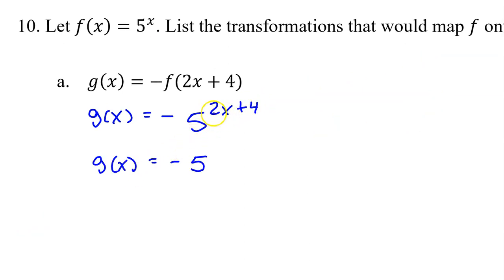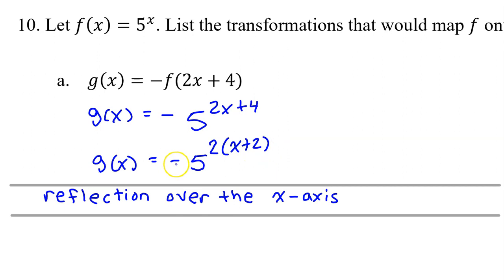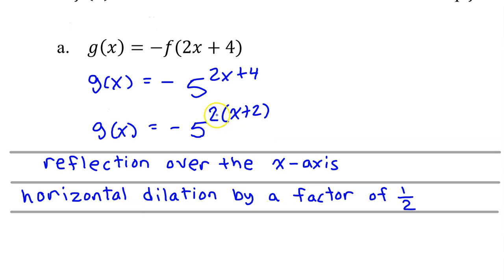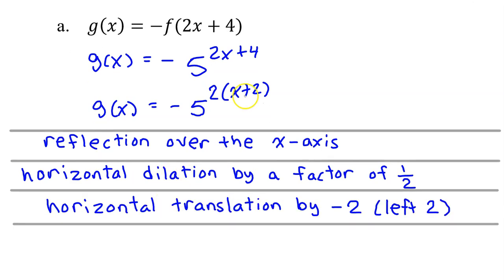To determine the transformations happening in the exponent, we need to factor out the 2 in the front, so this will become 2 times x plus 2. A negative sign in the front is a reflection over the x-axis. A 2 multiplying on the inside gives a horizontal dilation by a factor of 1 half — don't forget to take the reciprocal for a horizontal dilation. And finally, the plus 2 on the inside is a horizontal translation by negative 2, which is left 2, because it's always the opposite of the way it appears.